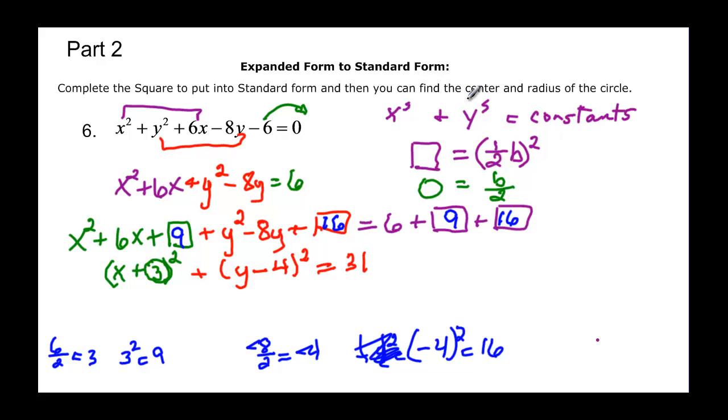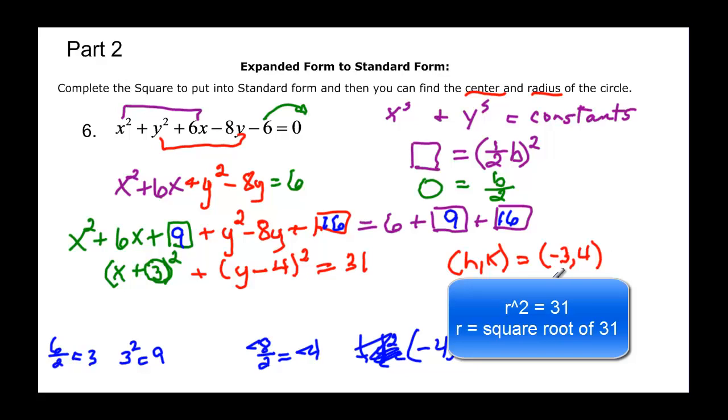15 plus 16 is going to be equal to 31. Then it says find the center and the radius. So hk is equal to, if it's x plus 3, that means it was a negative 3 that we subtracted. And if it's y minus 4, that means it was a positive 4 that we subtracted. And then the radius is equal to 31, but that's radius squared, so I have to take the square root. And we have the square root of 31.